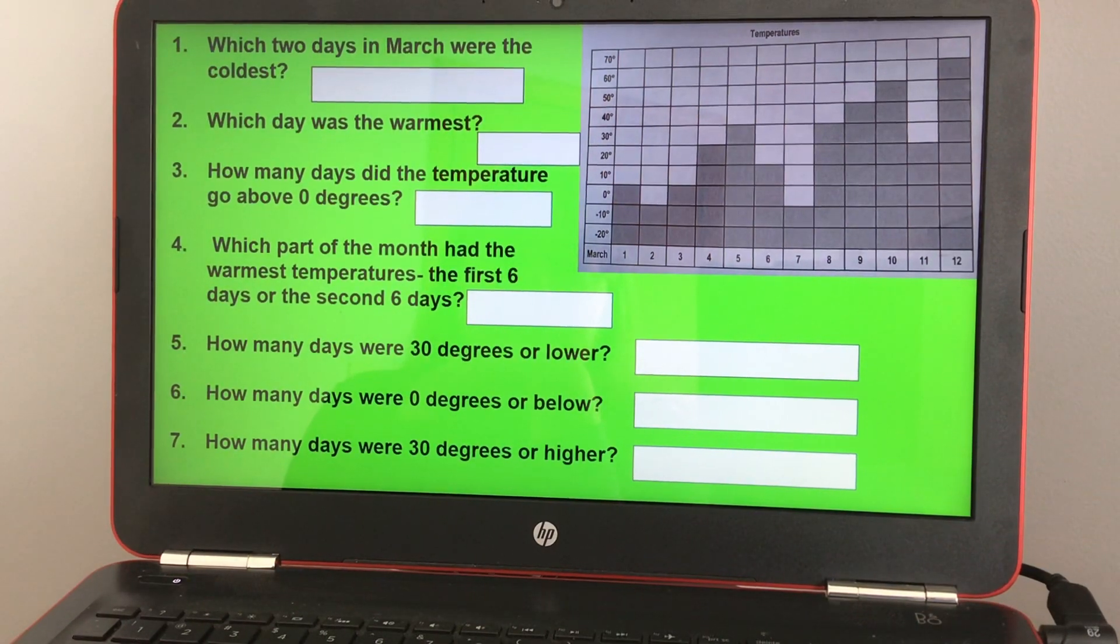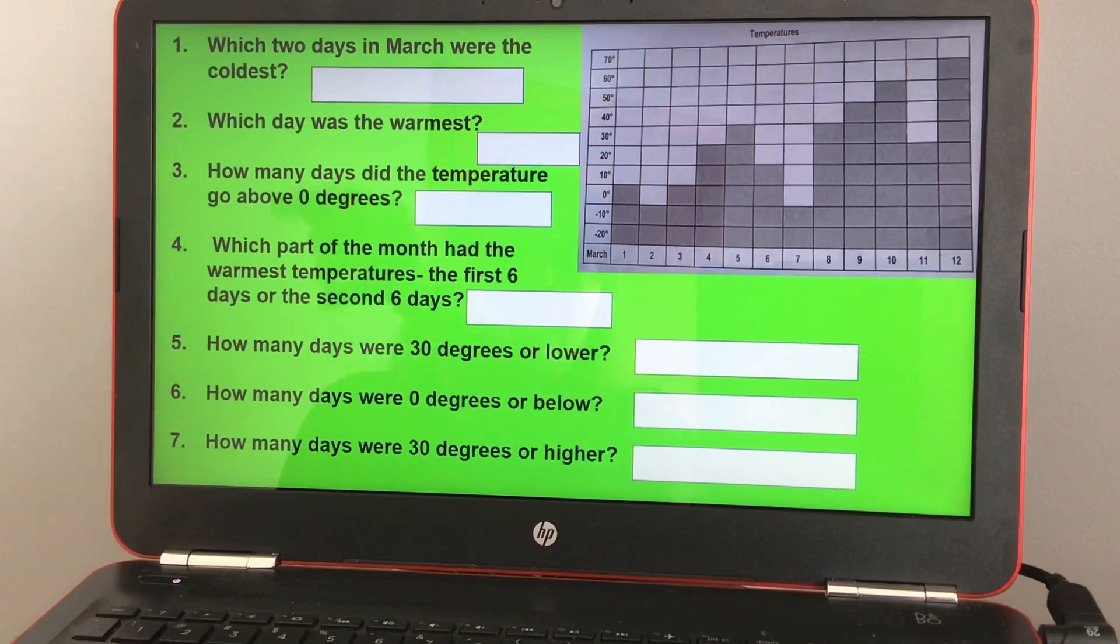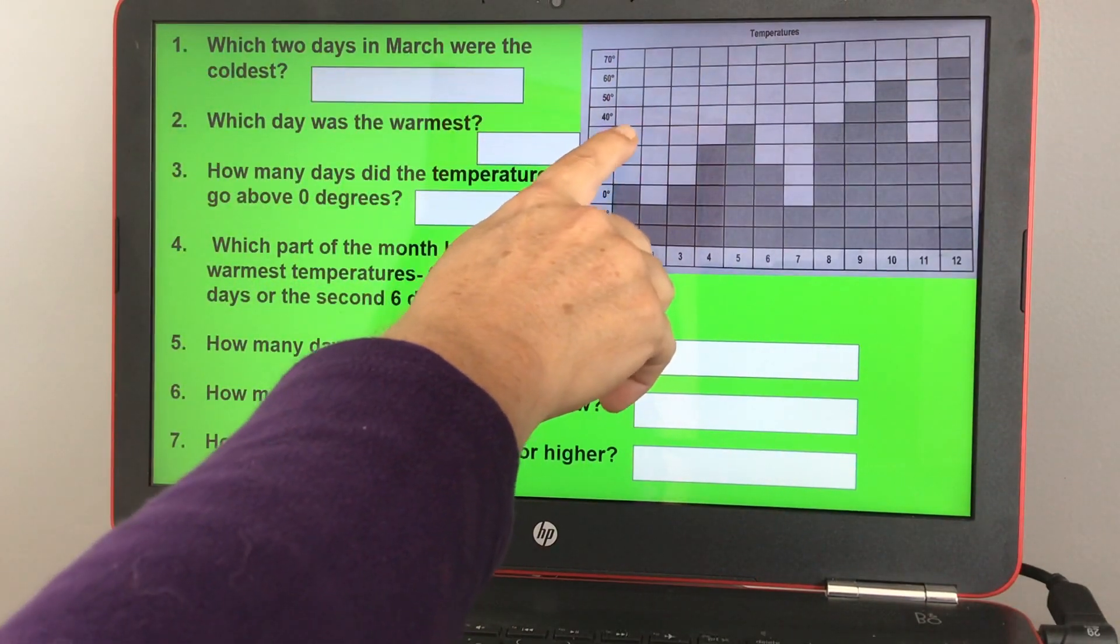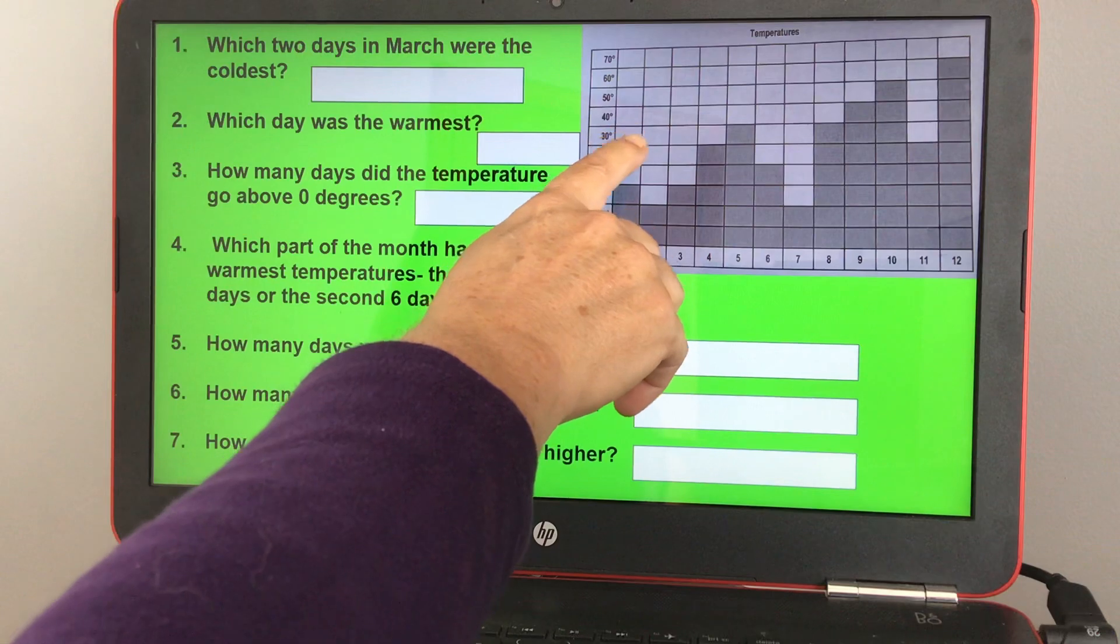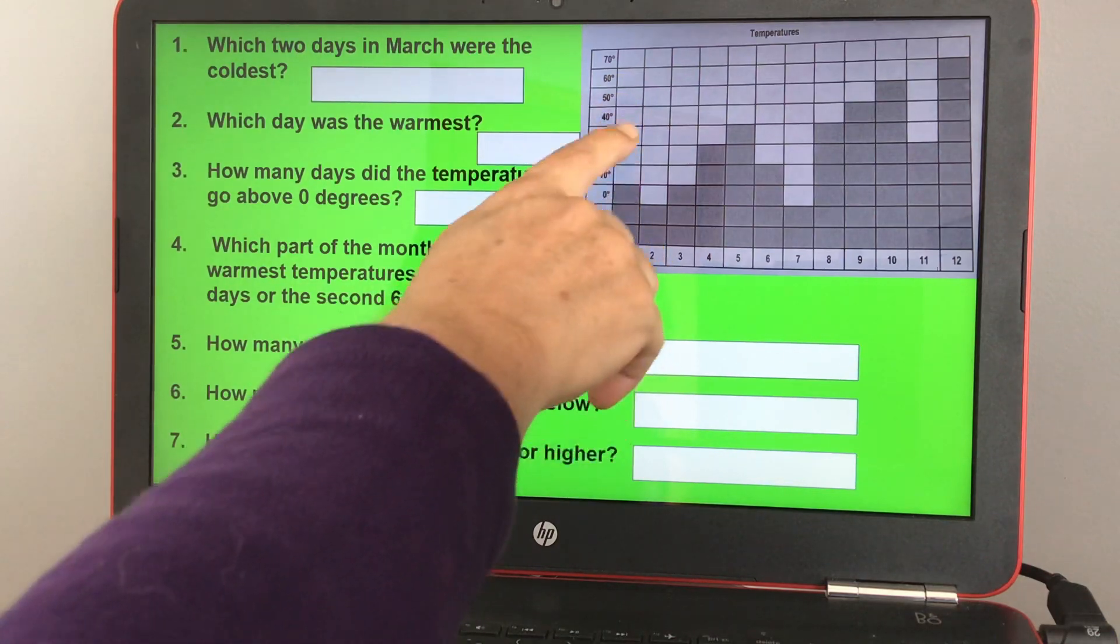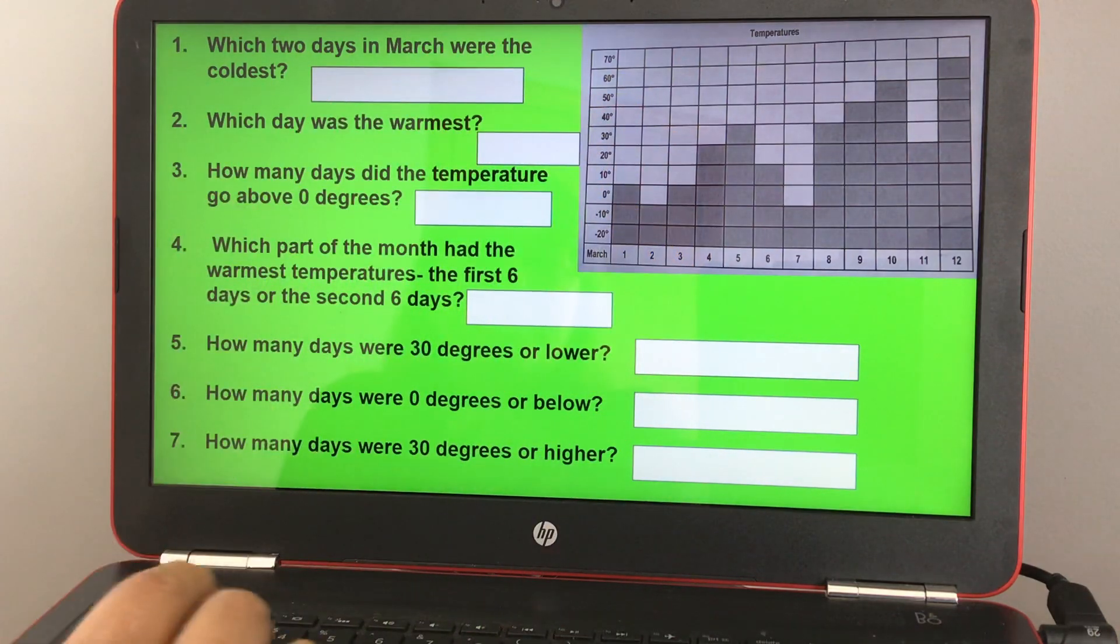Number five, how many days were 30 degrees or lower? So you'd have to go to 30, and if anything was not marked above it and only below it, you'd go to those days and count them.